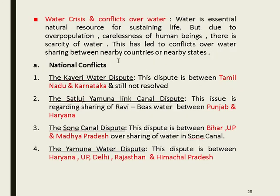Water crisis and conflicts arise because water is an essential resource, but due to overpopulation and human carelessness there is water scarcity, leading to conflicts over water sharing between countries and states. National conflicts in India include the Kaveri water dispute between Tamil Nadu and Karnataka, and the Satluj Yamuna Link Canal dispute between Punjab and Haryana.